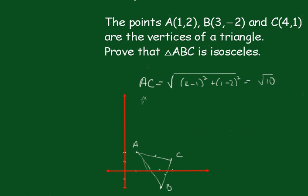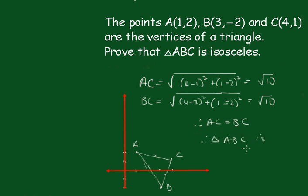BC is equal to the square root of (4-3)² plus (1-(-2))². Of course, that is 1², which is 1, and 3², which is 9. So again, we're getting the square root of 10. Therefore AC equals BC. Therefore triangle ABC is isosceles.